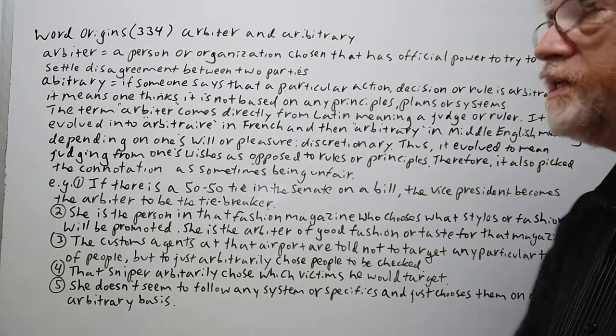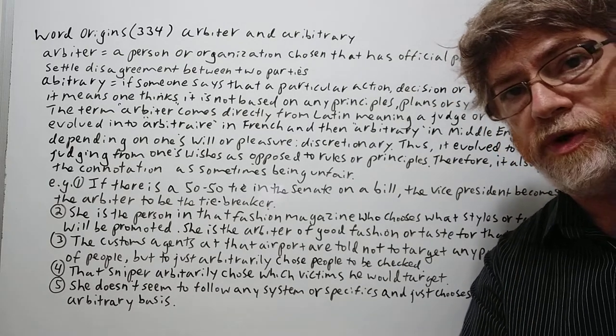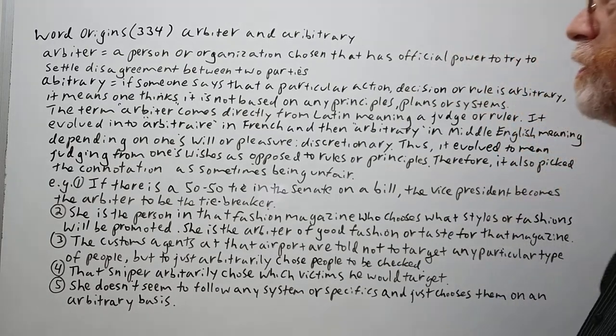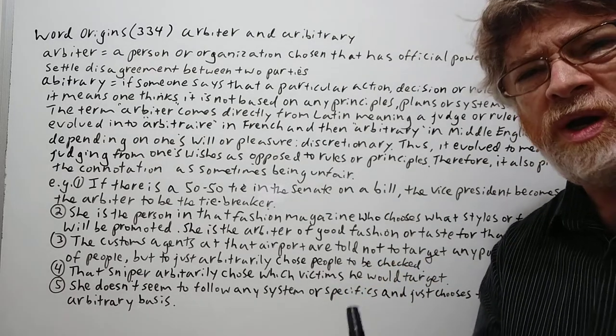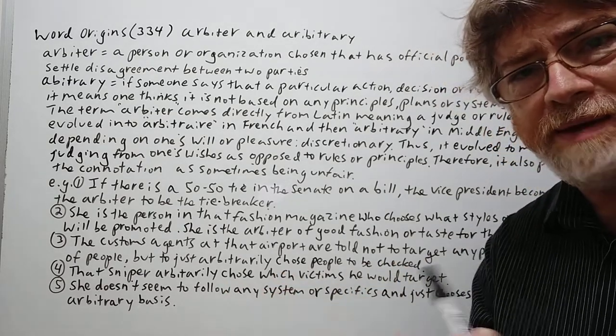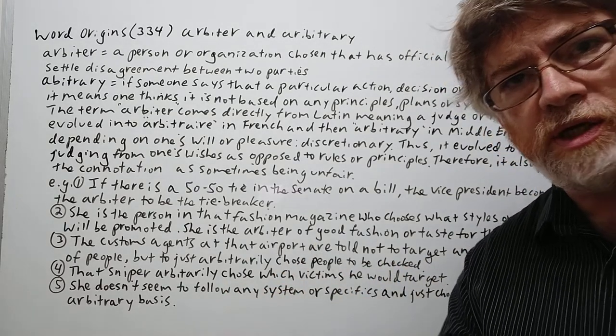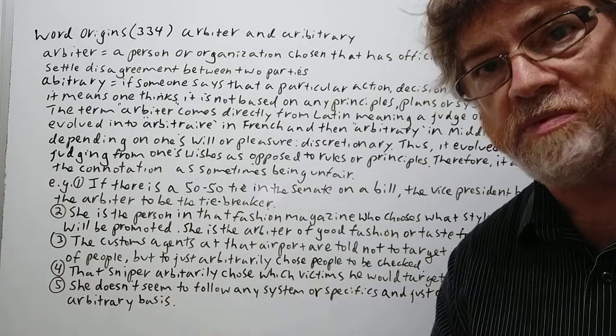Hi, this is Tutor Nick P and this is Word Origins 334. The word origin today is 'arbiter,' or 'arbitrary,' and by extension you can also say 'arbitrarily' as the adverb as well.